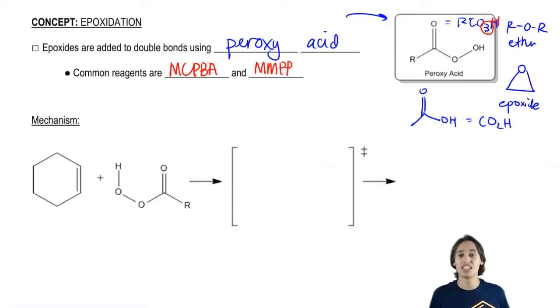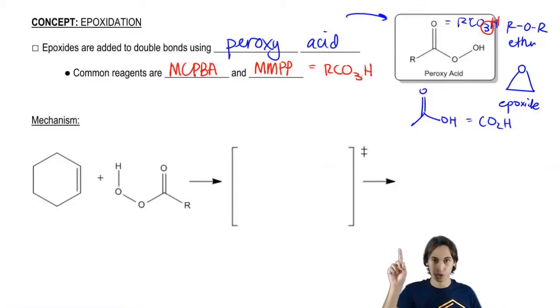These are two reagents that you don't need to know exactly what they look like, as long as you can recognize that these are types of peroxy acids. The only thing that changes is the R group, but the CO3H is the same.